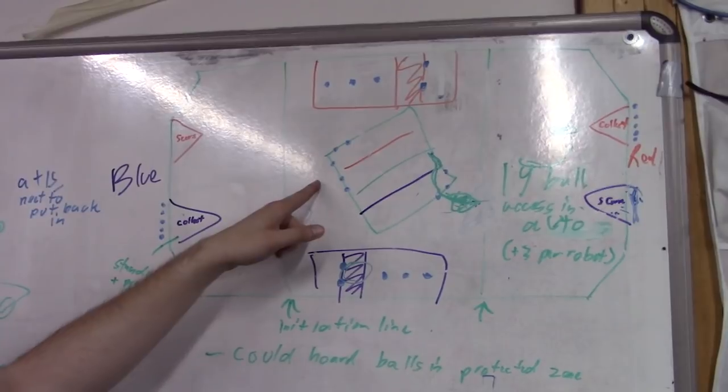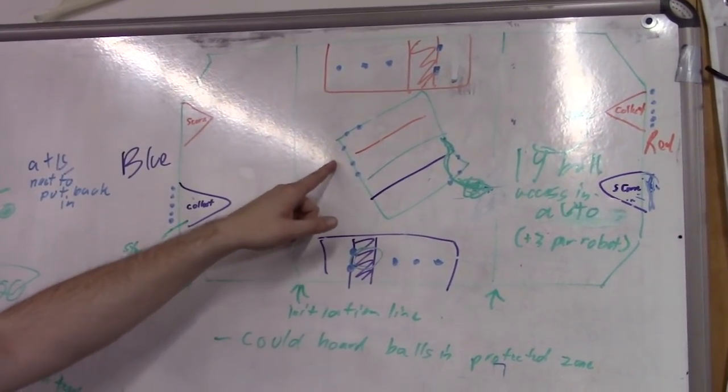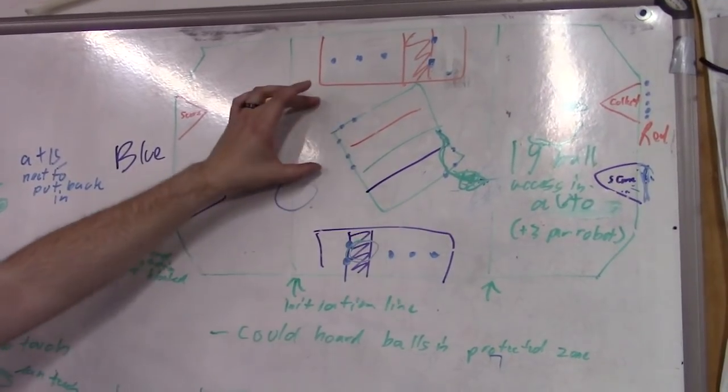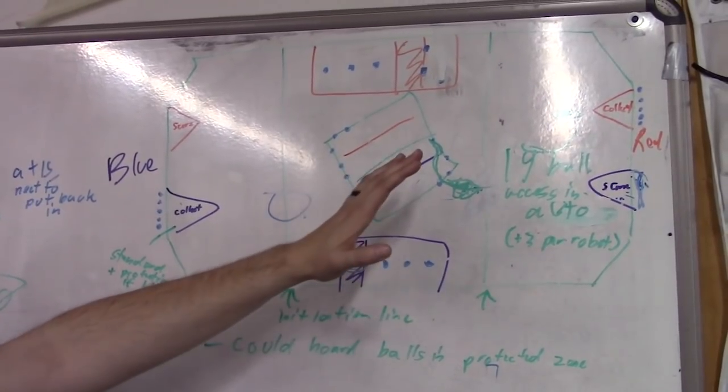I guess technically, could you go for these maybe? I don't know. We didn't even think about that. We have to look at it. We've done a lot in an hour or so, so a couple of little holes in there. But there's at least a 19-ball autonomous that's easily accessible by your team.